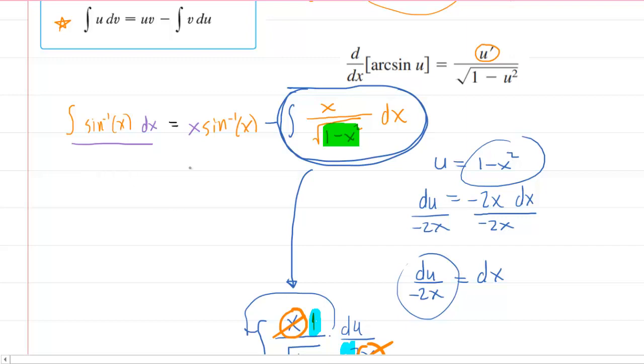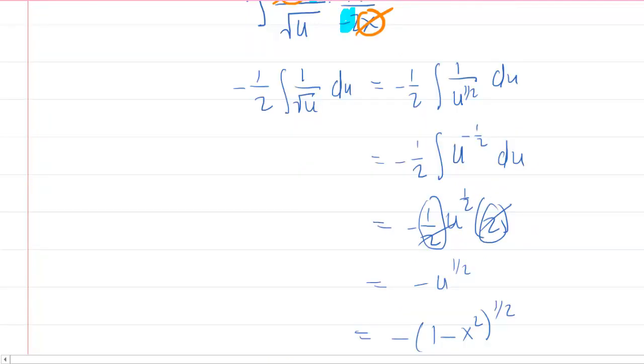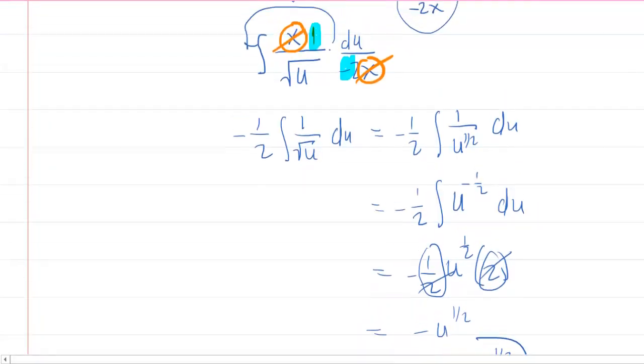So what we'll do for our final answer is rewrite it as such. So we have the integral of the inverse or arc sine of x dx equals x inverse sine of x. And then minus the result, which we just obtained, which was this negative 1 minus x squared to the half.